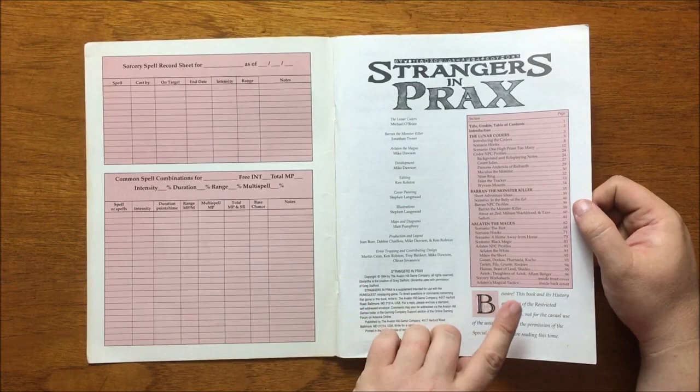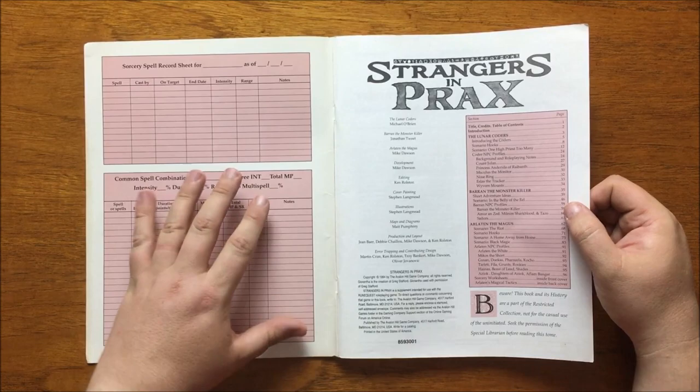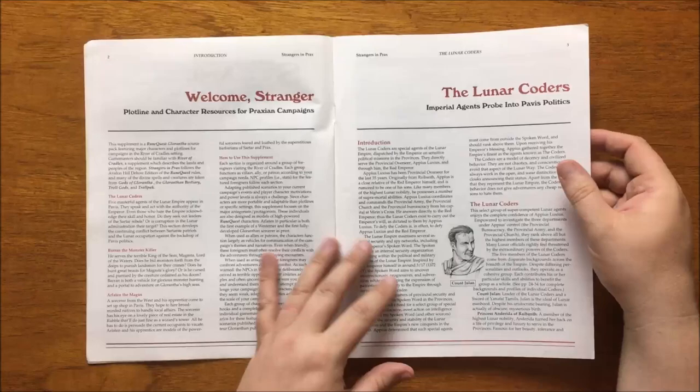As we open the book, we are greeted with the inscription: Beware, this book and its history are part of the Restricted Collection, not for the casual use of the uninitiated. Seek the permission of the special librarian before reading this tome. As with all of the RuneQuest books, I love these inscriptions as they really set the tone for what follows.